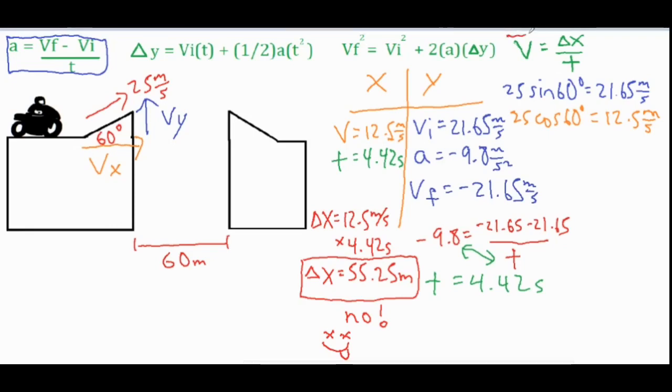And then we can only use this formula when calculating anything in the x direction because that's a constant velocity formula. So if we rearrange it, delta x equals v times t. So we took our v of 12.5 that we got from our original triangle times that t that we just got from the y side, the 4.42, multiply the two and then we got a delta x of 55.25 meters. So will the motorcyclists make it across? The answer is no, because the gap is 60 meters. Obviously 55.25 meters is going to be a little bit short.